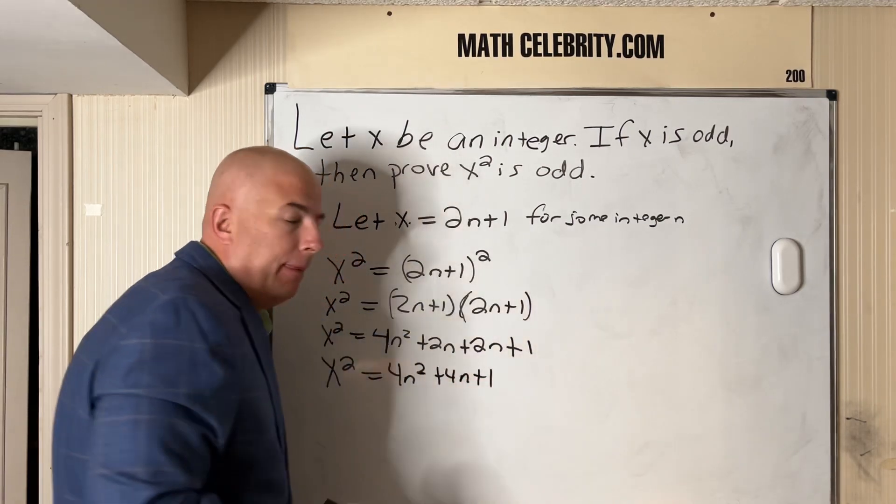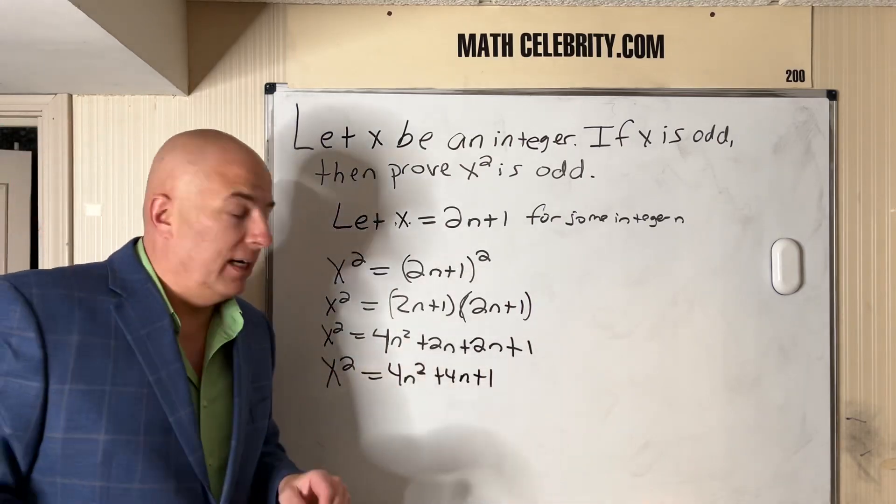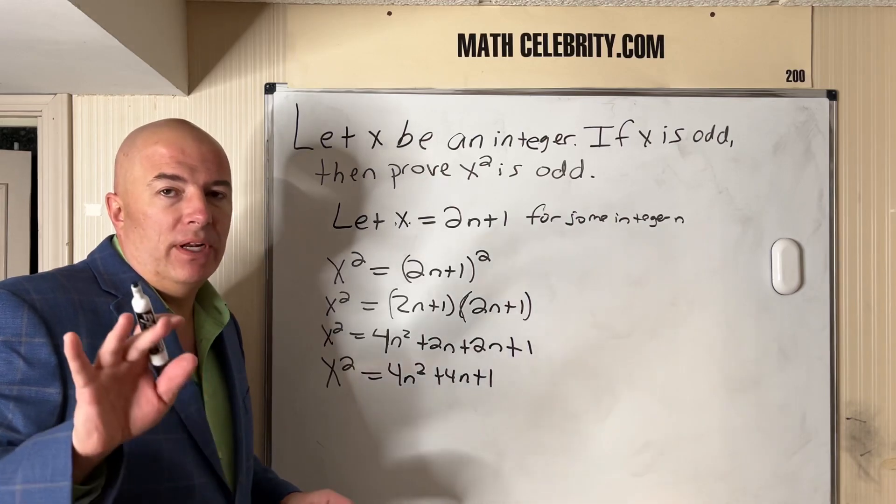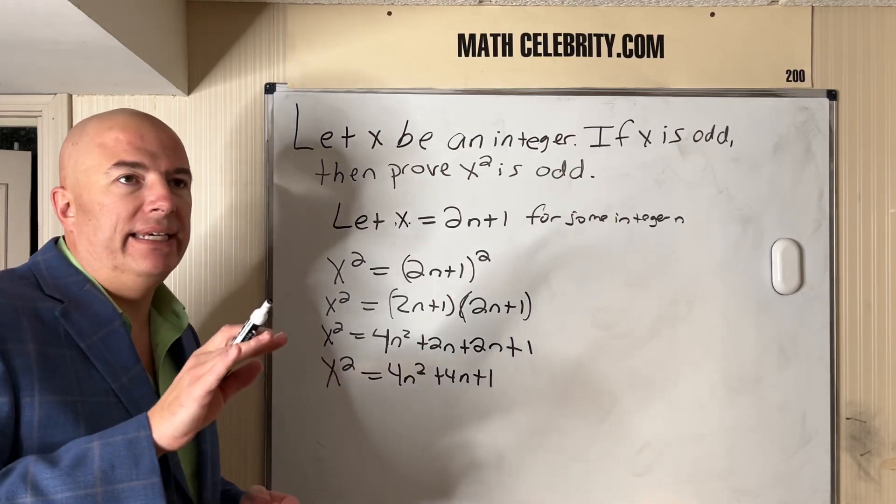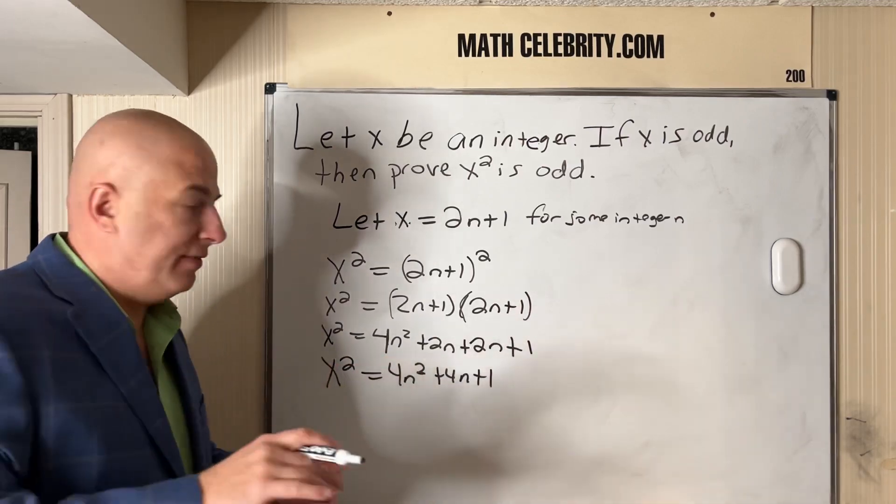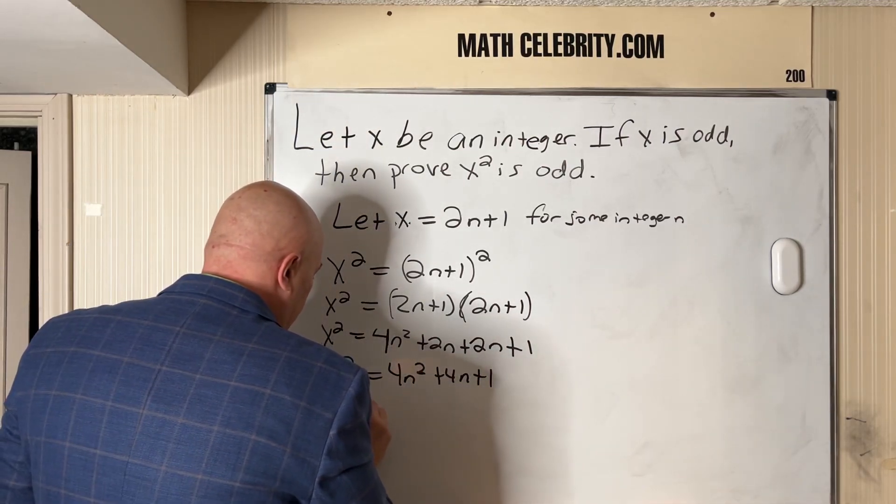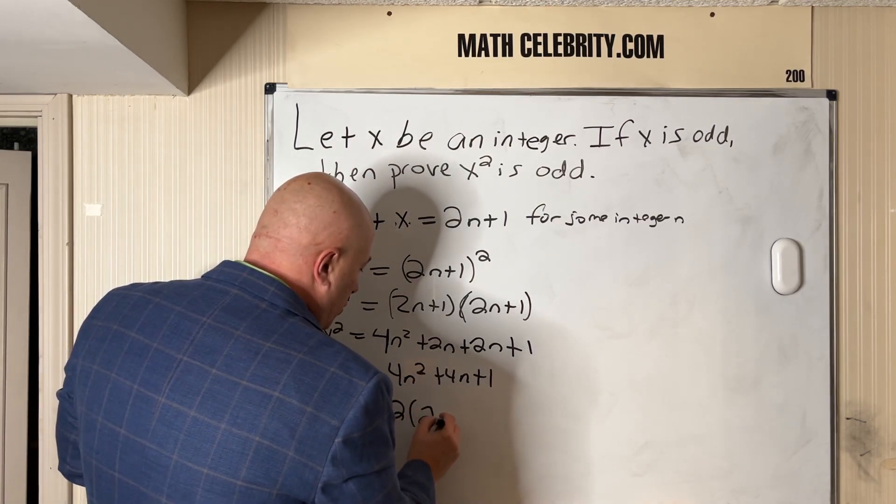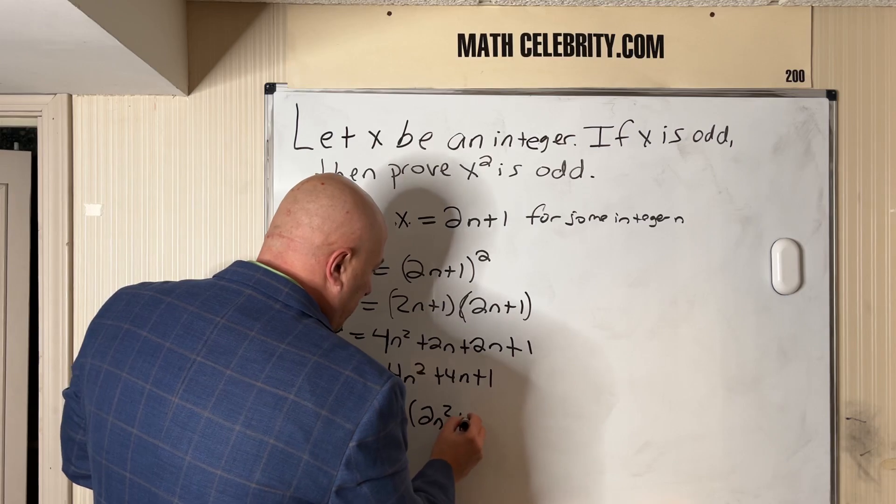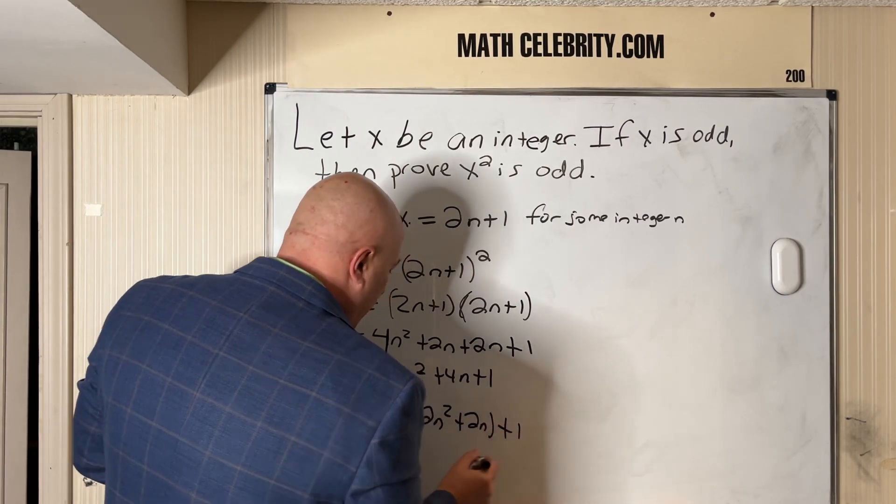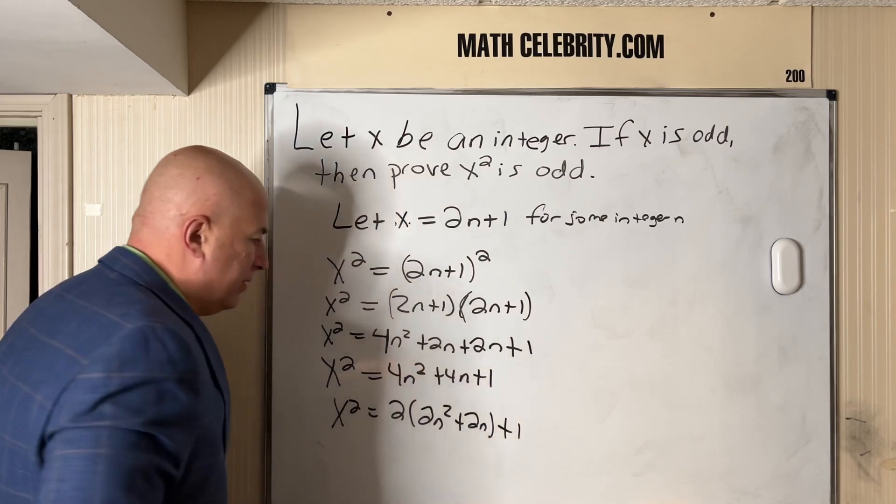Now we're almost there. We can factor out a 4, but I don't want to do that. I want to do 2 because 2 is the first even number in a whole sequence of numbers. So we've got x² equals, we factor out a 2, we get 2(2n² + 2n) + 1. So the 2 just multiplies by these two.